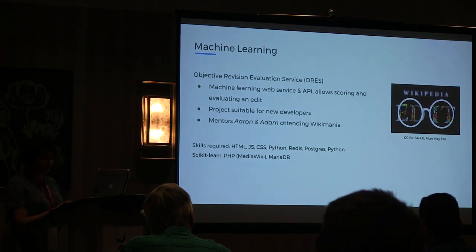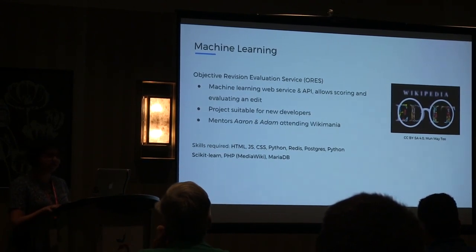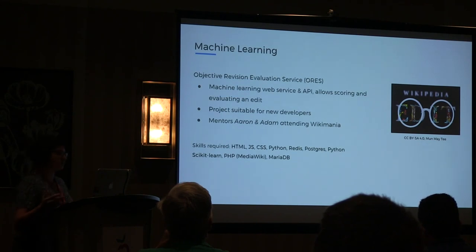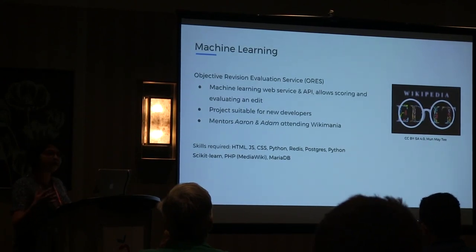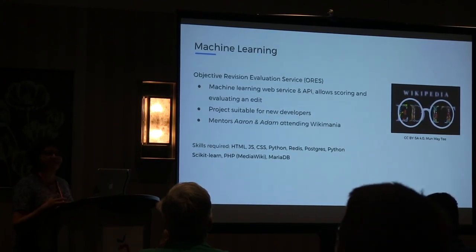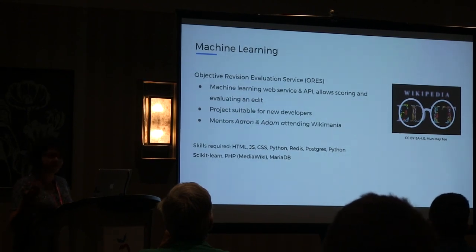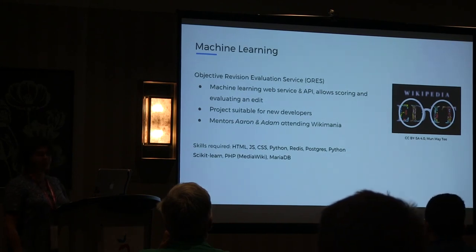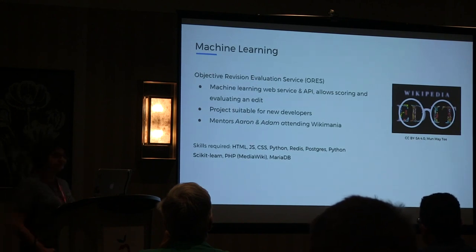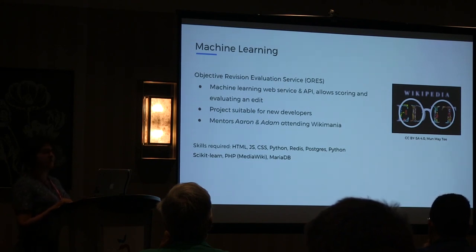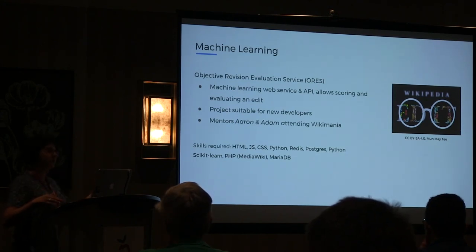Then there is also an area which is machine learning. You have already heard about this from Aaron today in the opening ceremony. It's a web service — an API — that allows you to store and evaluate edits, in the sense that it determines whether an edit made on a wiki is a bad quality edit or a good quality edit. If you are interested in this space, you can contact Alan and Adam. There is also a corresponding extension, which requires the same PHP skills as other MediaWiki work.